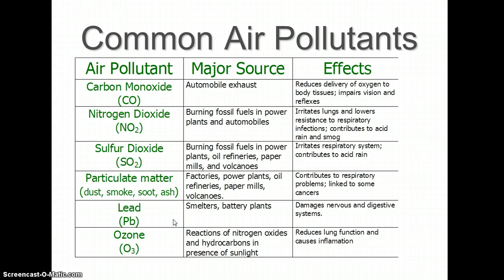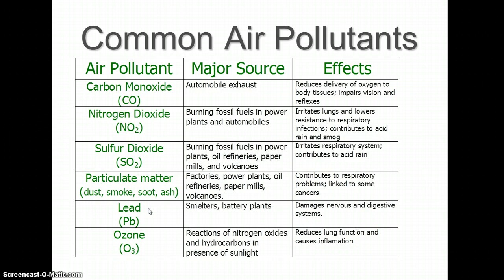Lead is not as much of an issue as it was prior to 1970 — you might think of the word 'unleaded' on gasoline. Prior to the 1970s, there was lead in gasoline, and when you burned that fuel, lead would become airborne. Lead is a neurotoxin — 'neuro' means nerve — so it breaks down nerve tissue and can cause brain damage. Everything is lead-free now. Paints also used to have lead, and children would eat paint chips, ending up with brain damage. It's still one of the six pollutants you need to know.